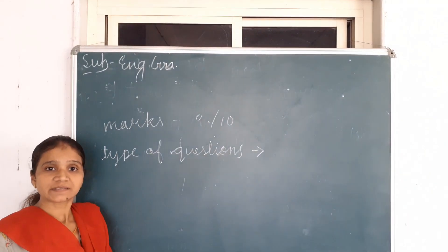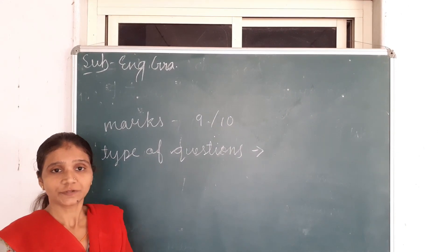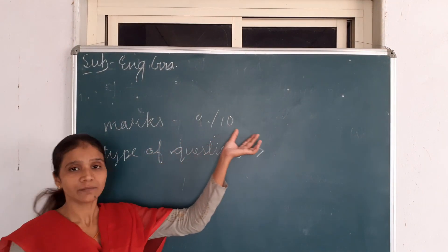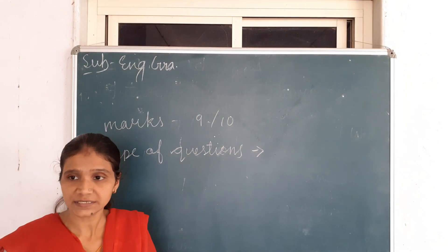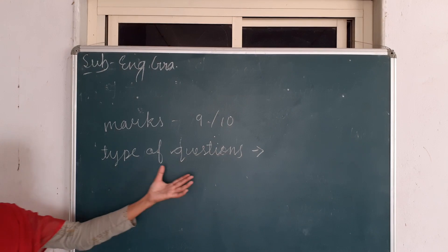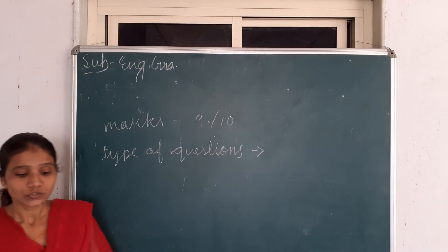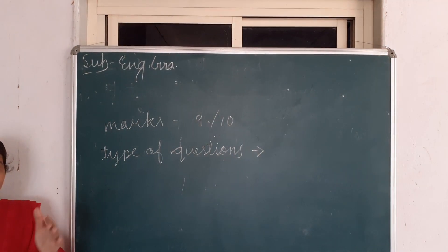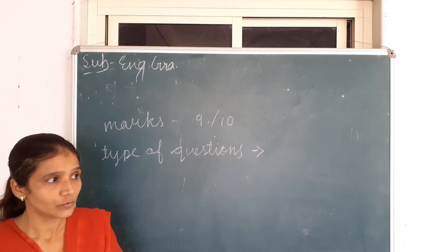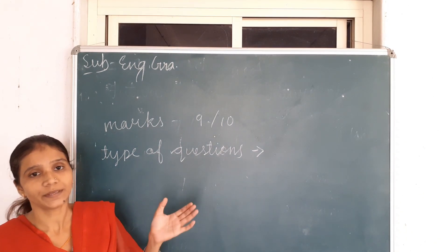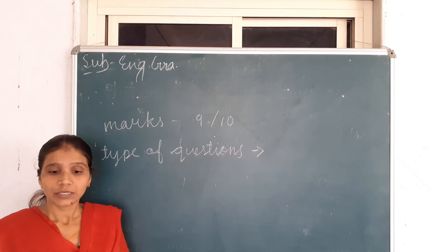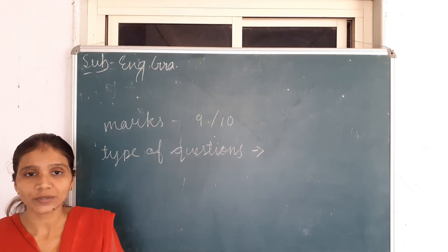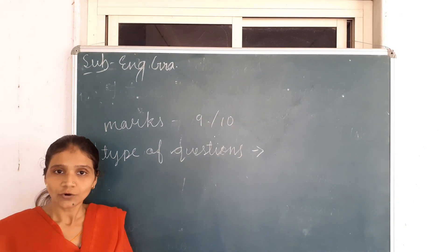At the end, we will discuss the grammar portion — which type of questions will be there in your question paper and the marks. The marks weightage for the grammar section is 9 to 10 marks. If there are any changes, I will inform you. The first type will be MCQs — you have to choose the correct option. Then there will be a passage and from each line you have to identify the incorrect word and make it correct. I hope you liked this video. If you have any query, you can ask me anytime — you can send audio clips or messages. Thank you so much. Stay home. Stay safe.